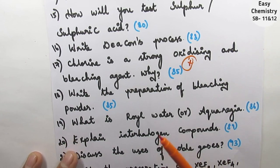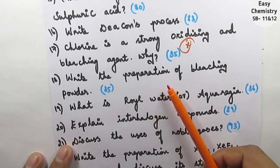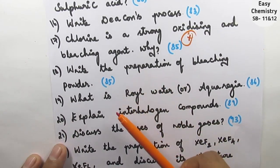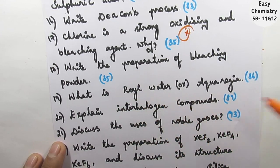Next question number 18: write the preparation of bleaching powder. This is important. Question 19: what is royal water or aqua regia? This is also important.